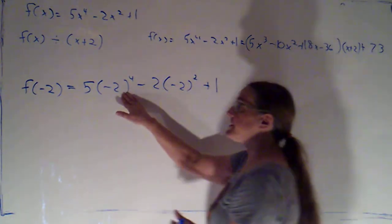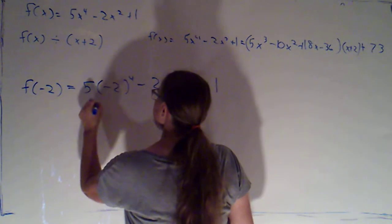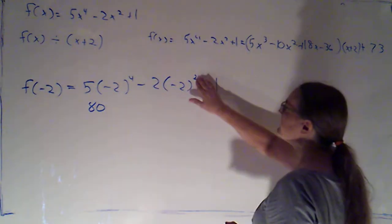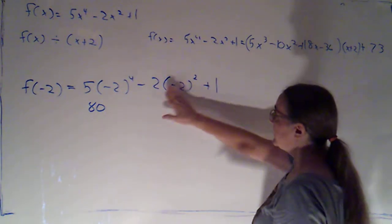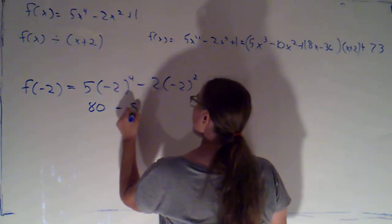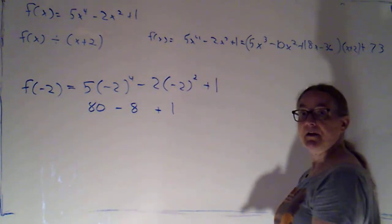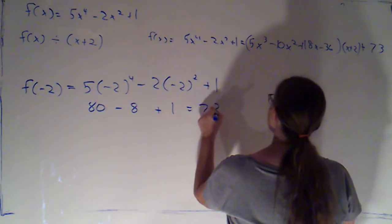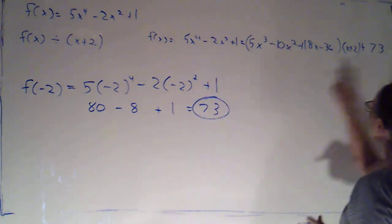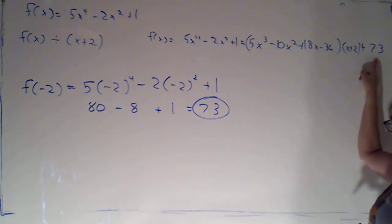Negative 2 to the 4th is 16 times 5 is 80. Negative 2 squared is 4 times negative 2. We're going to get a minus 8. And then I've still got that plus 1. That's 73. That's the same number we got for the remainder.